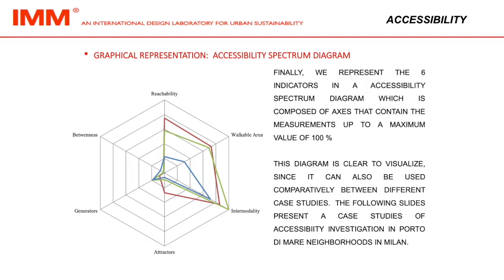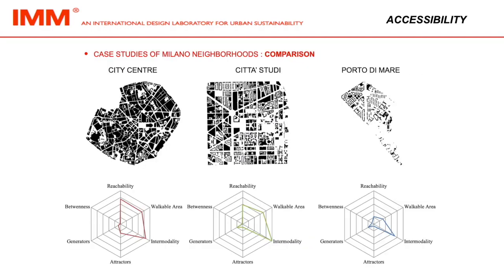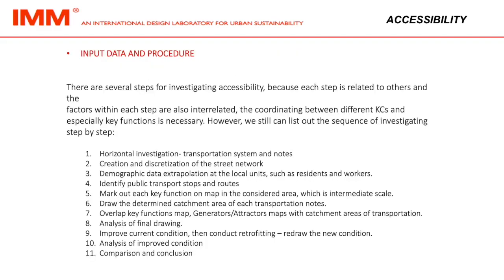The following slides present a case study of accessibility investigation in Porto di Mari neighborhoods in Milan. Here we can see the comparison between the case studies of Milano neighborhoods: City Center, Città Studi, and Porto di Mari. There are several steps for investigating accessibility because each step is related to others and the factors within each step are also interrelated. The coordinating between different cases and special key functions is necessary.